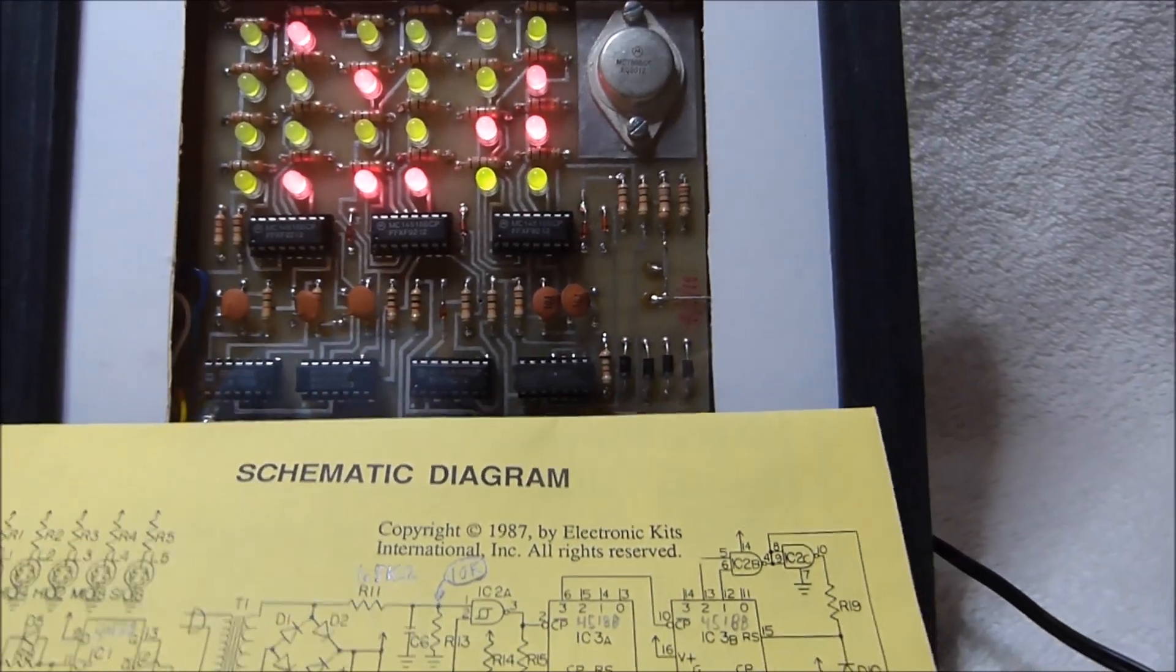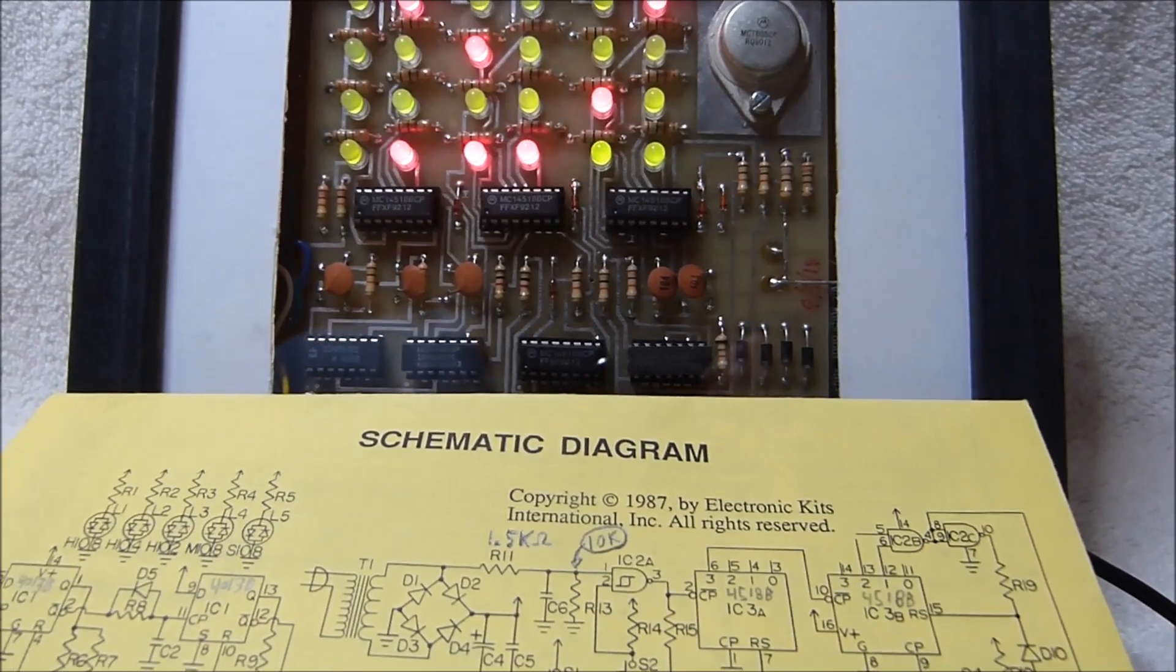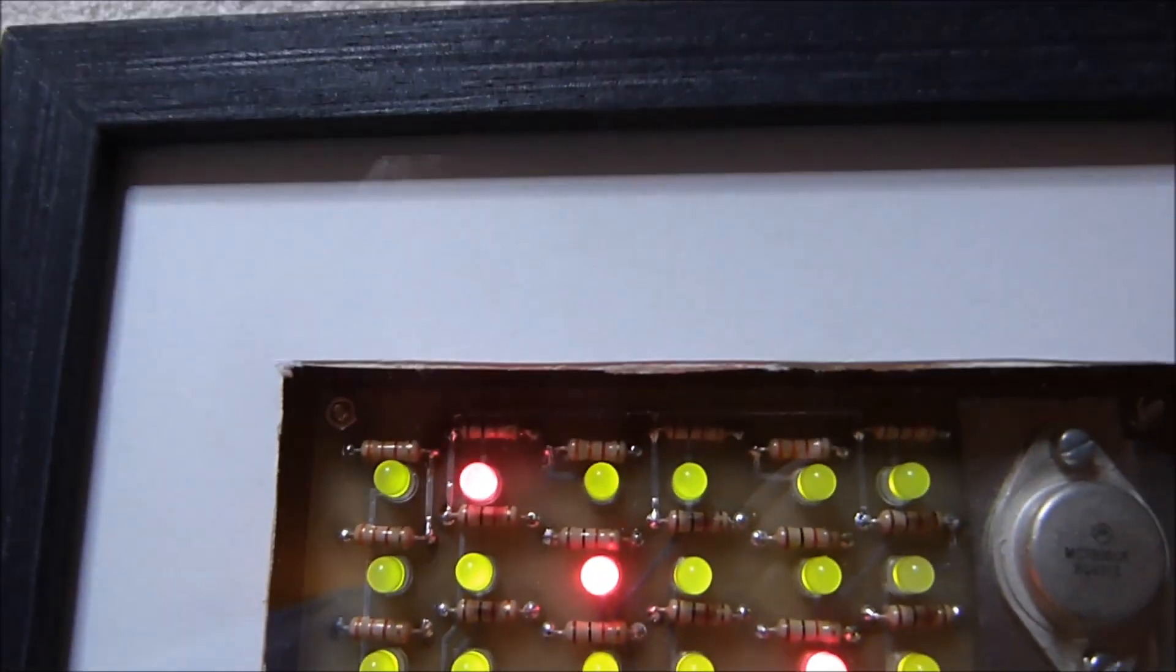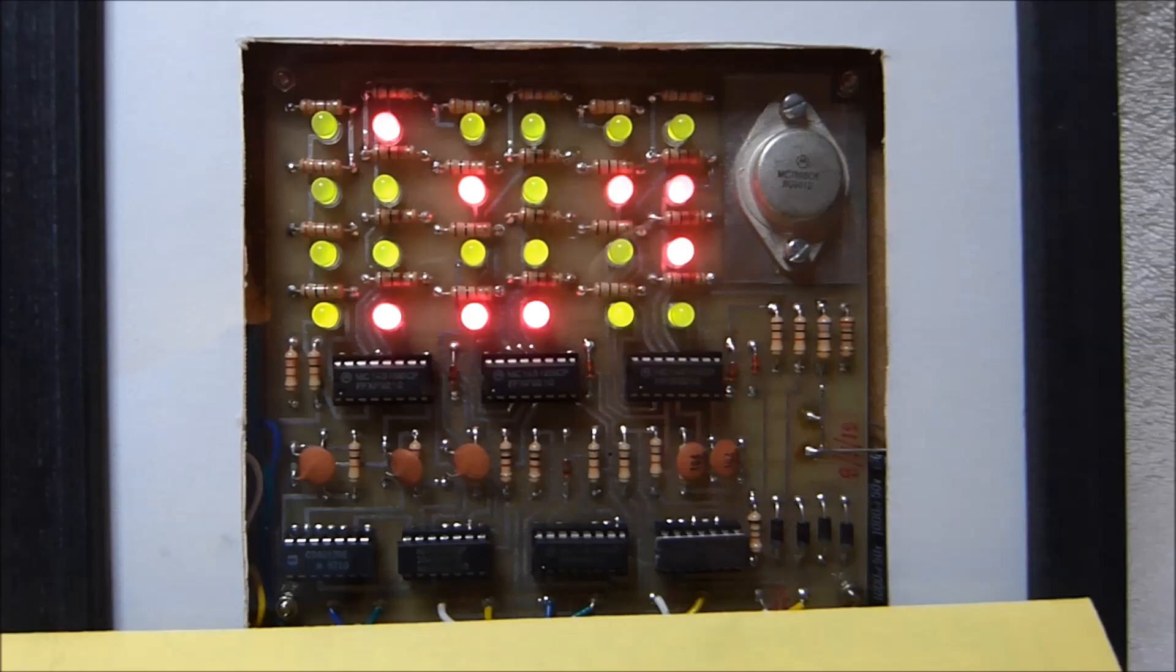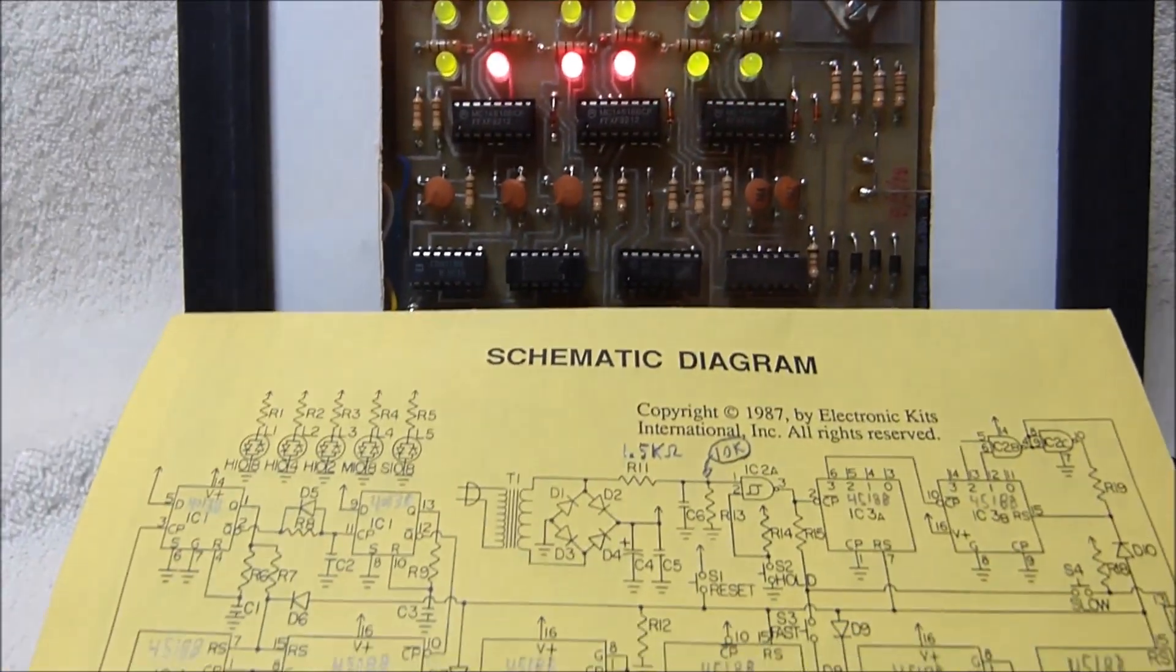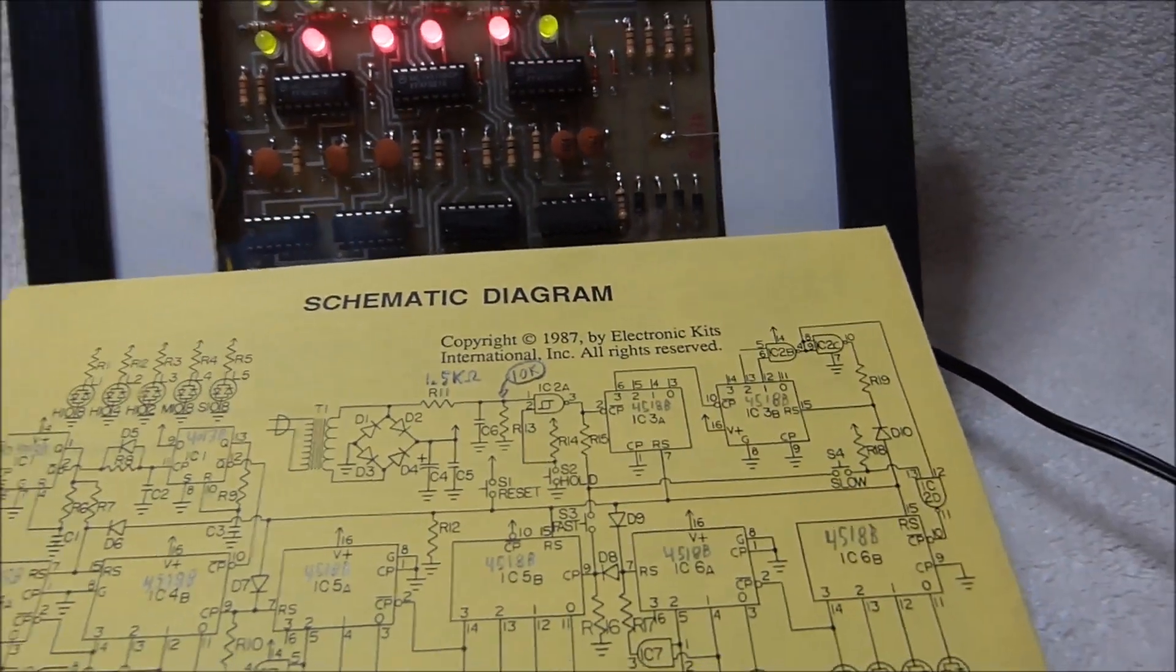More than half of the chips are these 4518Bs, and those are the ones that drive the LEDs. This clock uses pretty much the bare minimum of CMOS logic gates to do what it does.